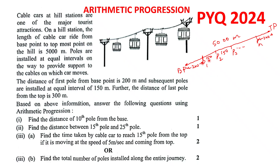The first pole's distance from the base is 200 meters. The second pole's distance from the base will be 200 plus 150, which is 350 meters. The next will be 500 meters, and so on. So you can see it is forming an AP where the common difference is 150.